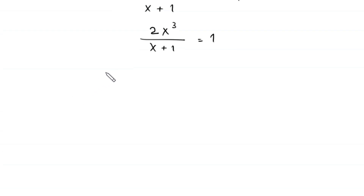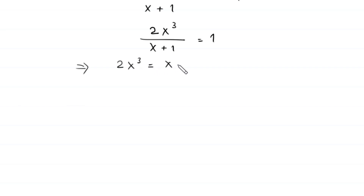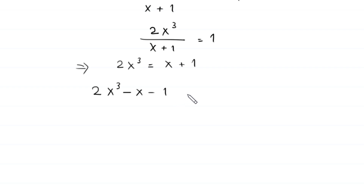Multiplying both sides by (x + 1), this implies 2x³ = x + 1. Moving these two terms to the left-hand side, this becomes 2x³ - x - 1 = 0.